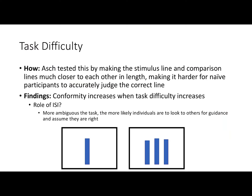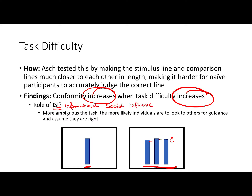The third and final variable Asch investigated was task difficulty. He made the stimulus line and the comparison lines much closer in length, so there was little difference between them, making it harder for participants to accurately judge the correct line. Asch found that conformity increases when task difficulty increases. When people are less certain about the correct answer, they're more likely to look to the group for guidance — this can be best explained by informational social influence, where we look to the group to be right. The more ambiguous the task, the more likely individuals are to look to others for guidance, assuming the group has access to the correct information.